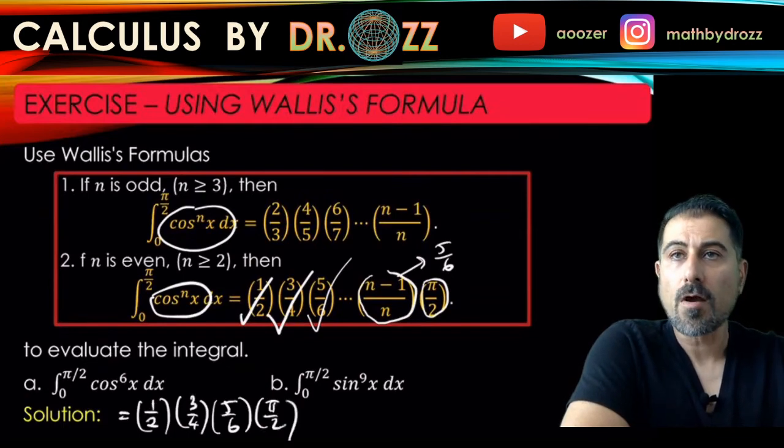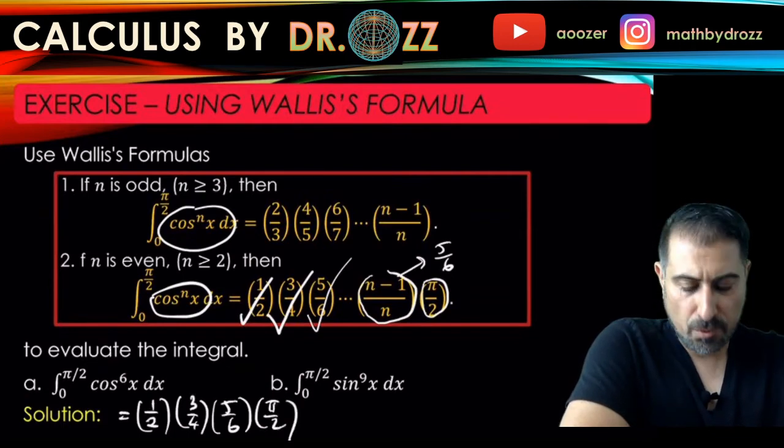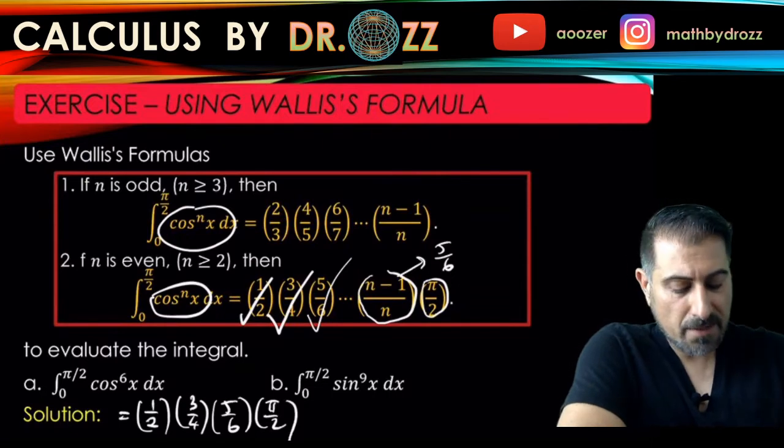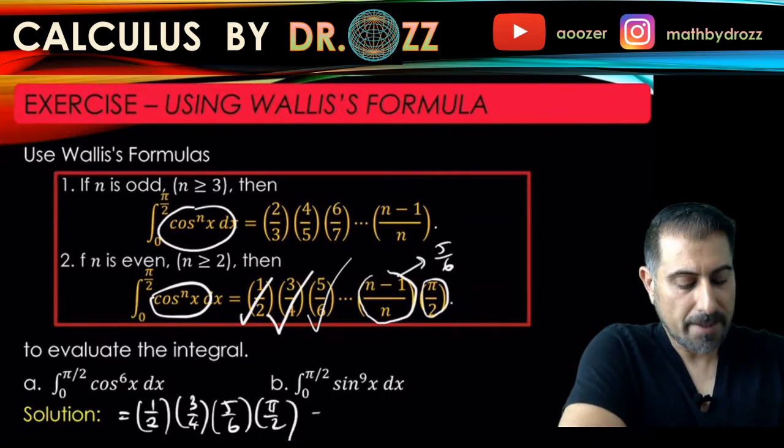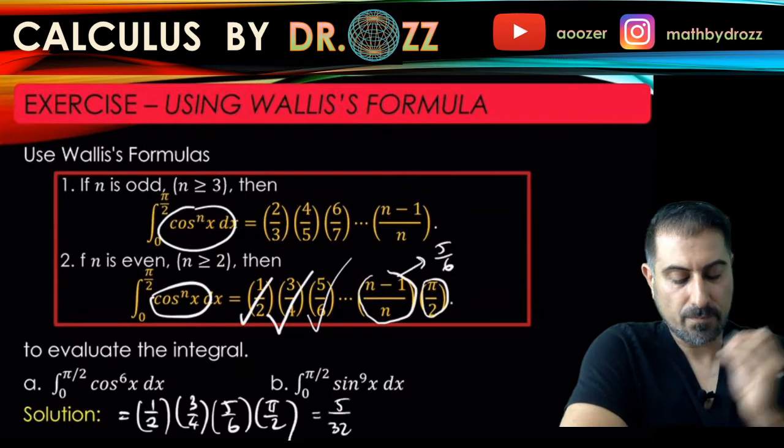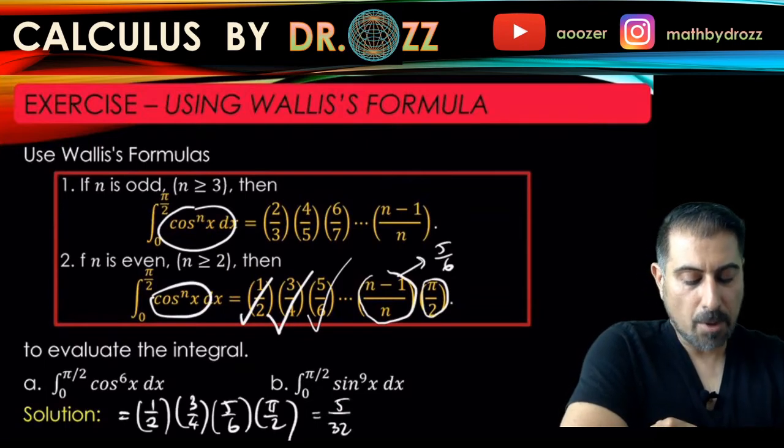So that is, if you multiply those numbers, it's 5 over 32 pi. That takes care of part a.